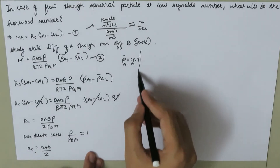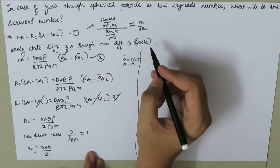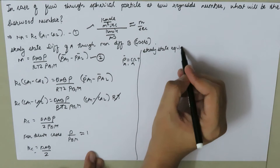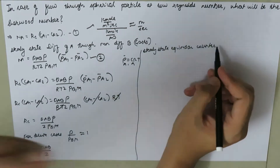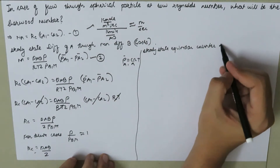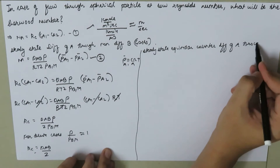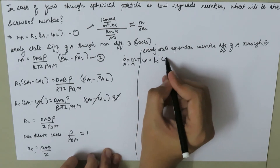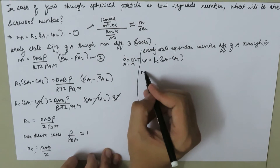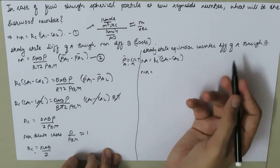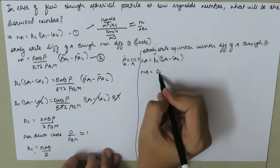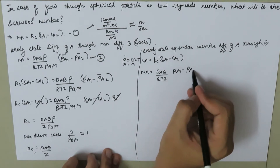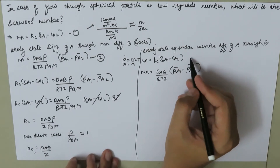Now if we consider the case of steady-state equimolar counter diffusion of A through B, we can write the molar flux NA as equal to Kc prime times (C1 minus C2). And we know that for steady-state equimolar counter diffusion of A through B, we can write DAB over RTZ times (PA1 bar minus PA2 bar). Let's call this equation number three.